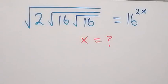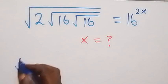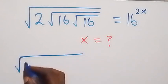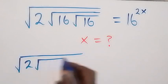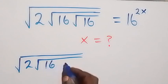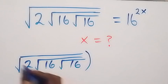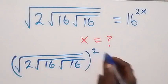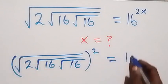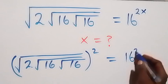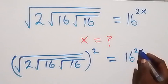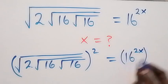Hello, you are welcome. How to solve for x in this nice square root problem. From here, let's square both sides. On this side we have square root of 2, and inside that we have square root of 16 and also square root of 16. Everything on this side is squared, and on the other side we have 16 to the power 2x, also all squared.